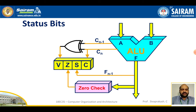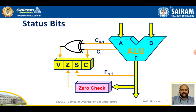By verifying the status bits, we can determine what category the result belongs to — whether it is a positive number, a negative number, a zero result, or whether a carry or overflow has occurred. This is how conditional codes are produced using status bits.